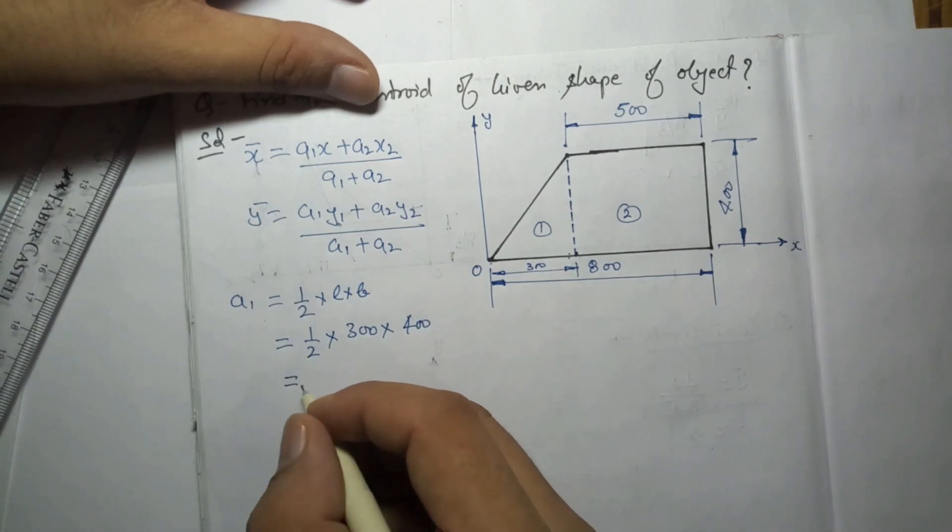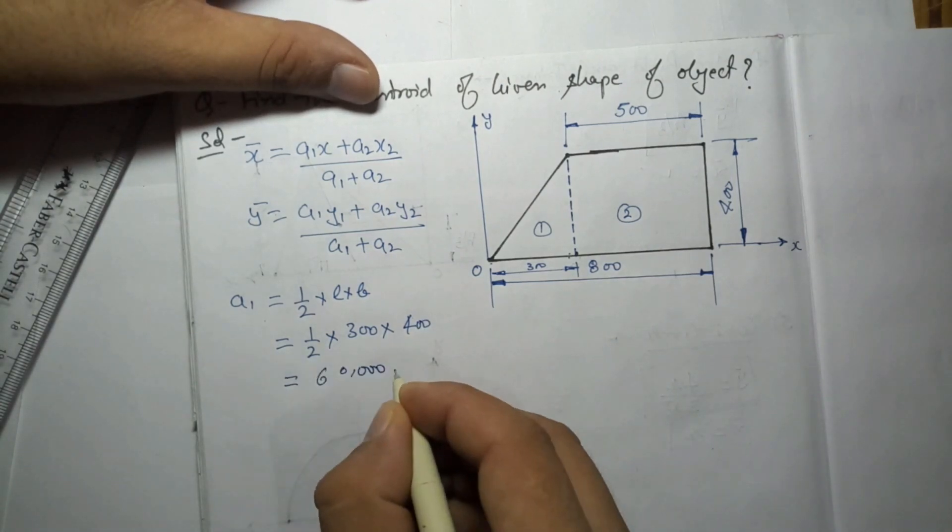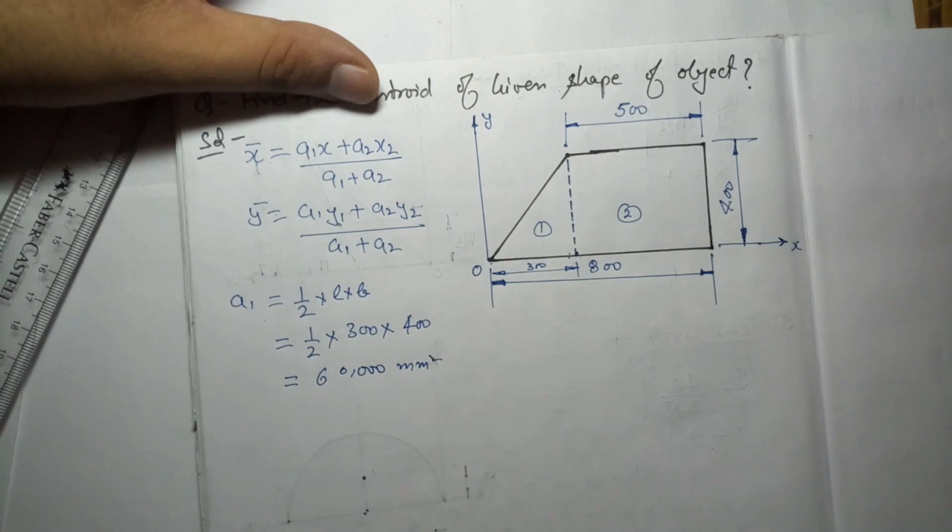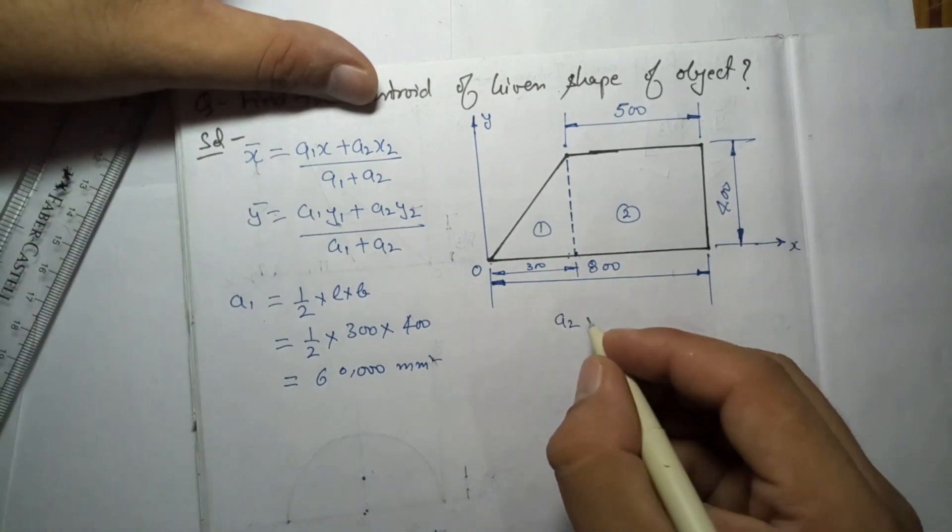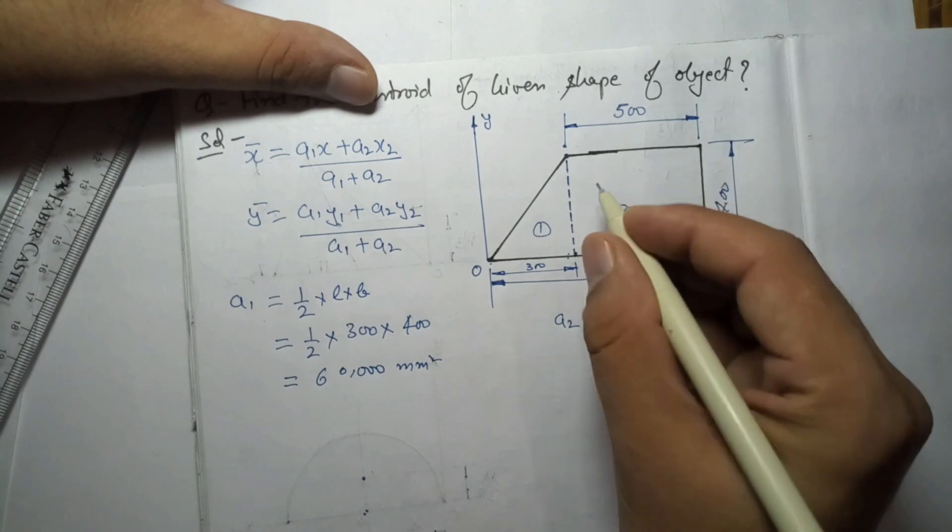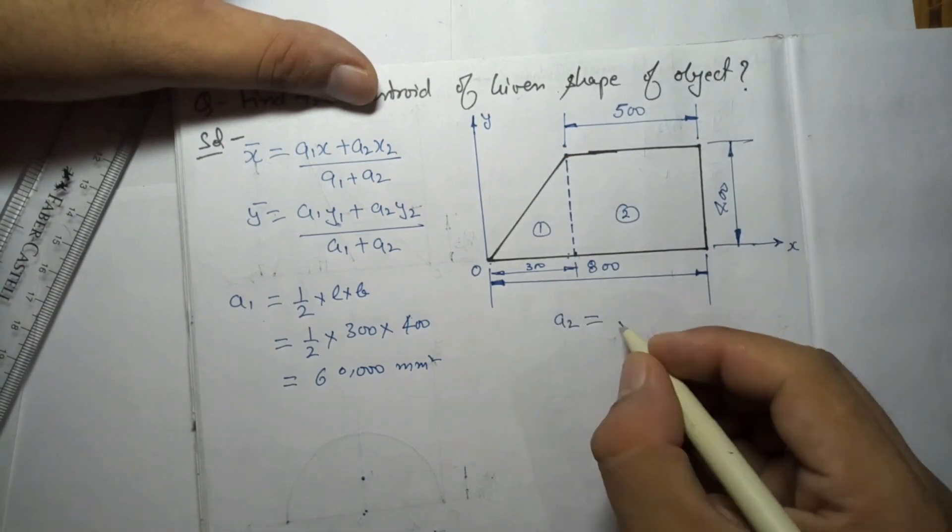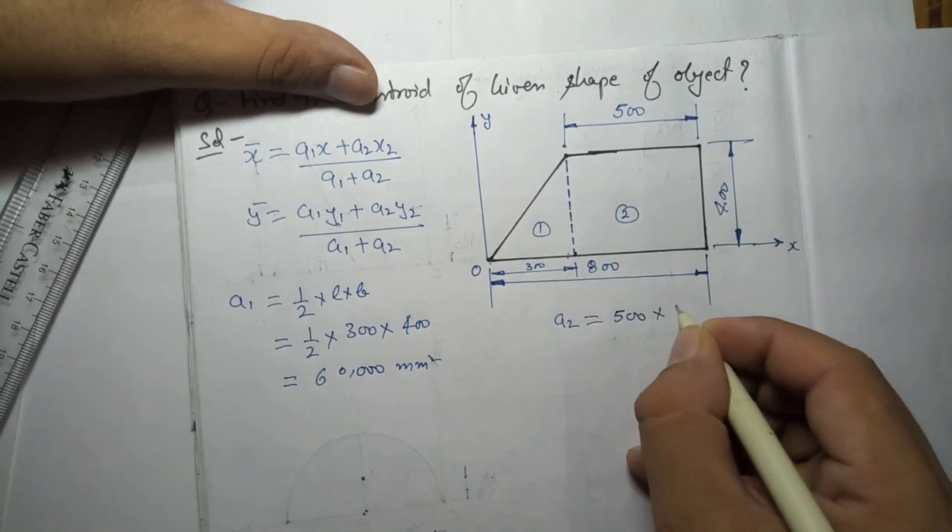So A1 we are getting is equal to 60,000 mm². Now what about A2? A2 is for this rectangle, so this is 500 by 400. So A2 will be length into width, that is 500 × 400 = 200,000 mm².